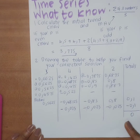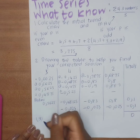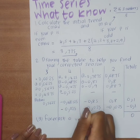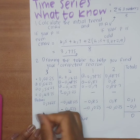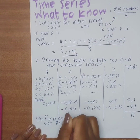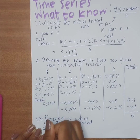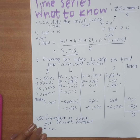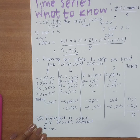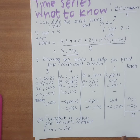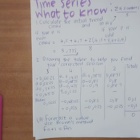Another thing to remember: when forecasting a value using Brown's method, the forecast of period n+1 — so if n is 14 and they ask for period 15 — it will always equal a_n, the last value of your smoothed series.